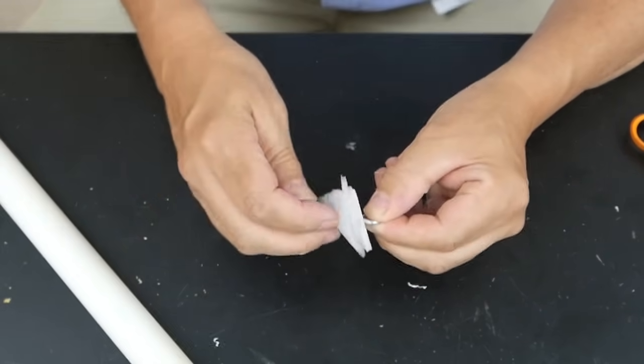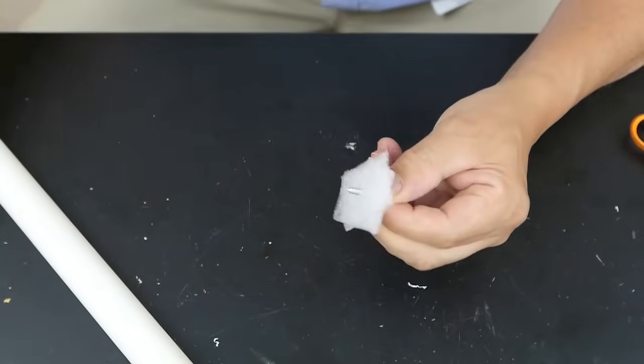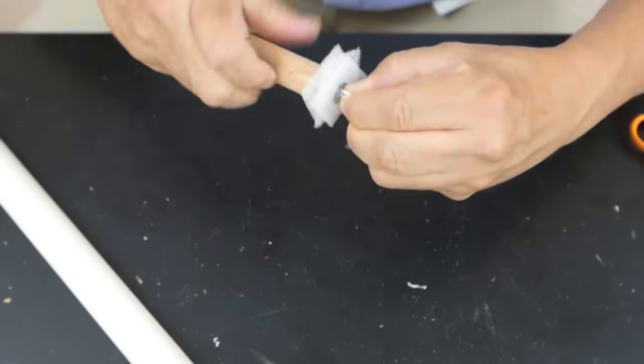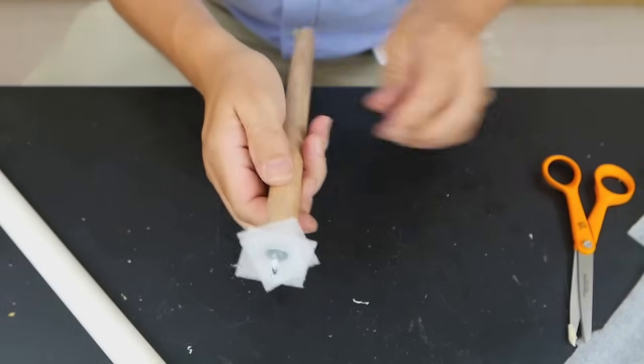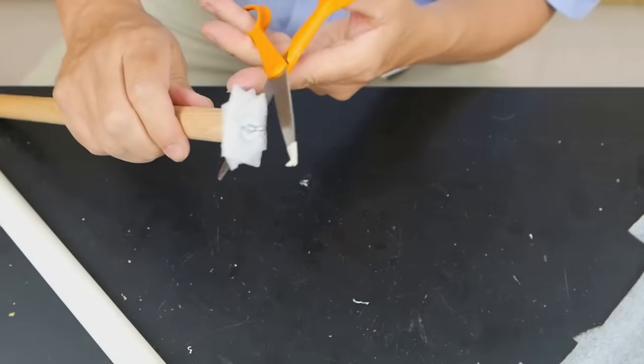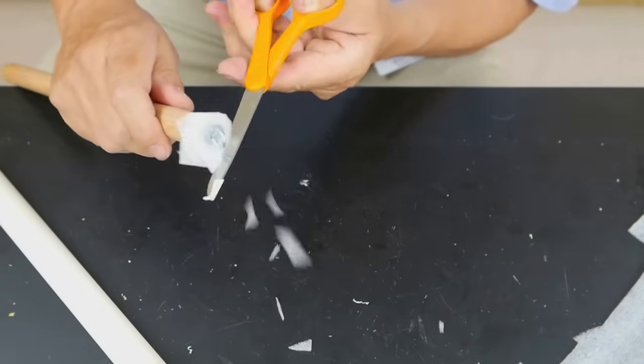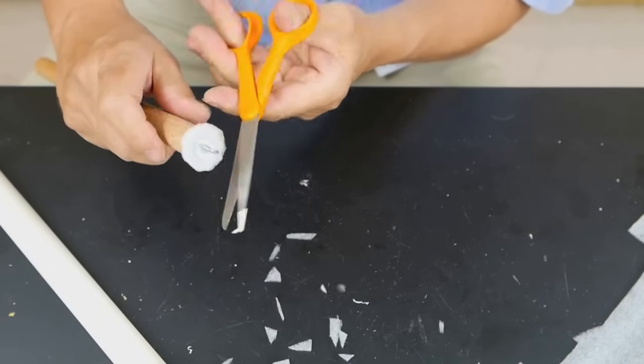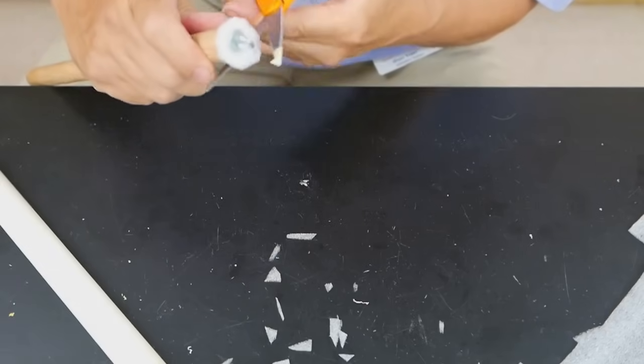Next I'm going to screw them onto the end of the dowel and that's going to be our piston. You may have noticed that the foam overlaps quite a bit and that's fine. We're simply going to take the scissors and trim it down so that it's slightly larger than the dowel itself. Hopefully when it's inside the tube that's going to give us a nice airtight seal.